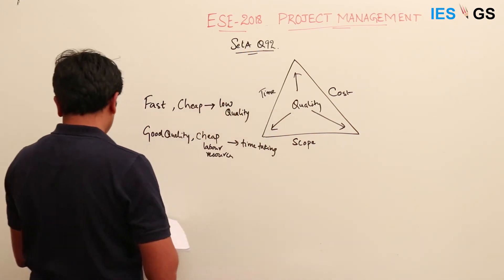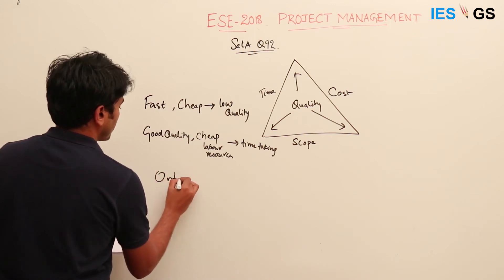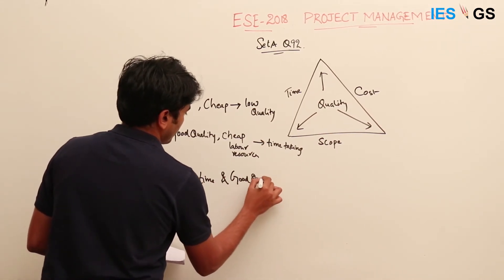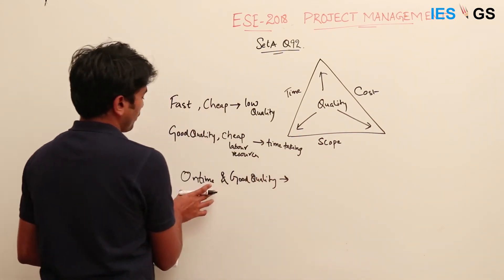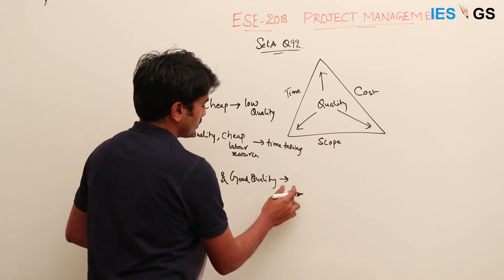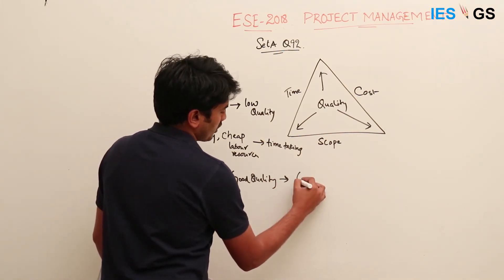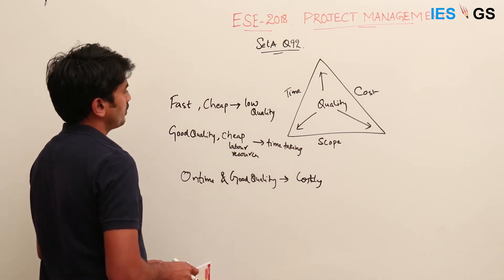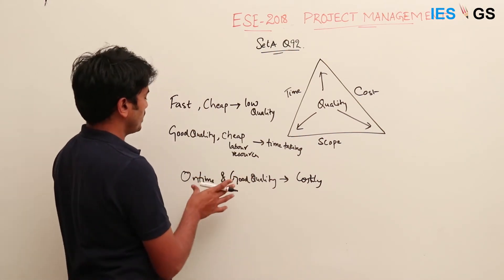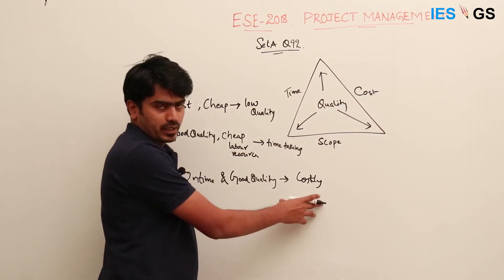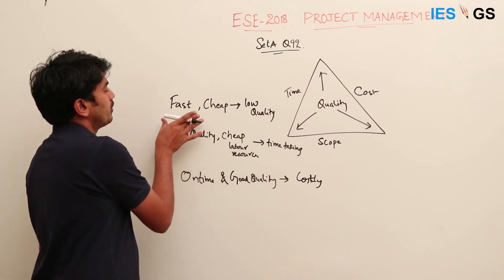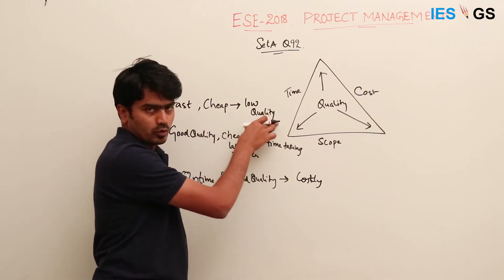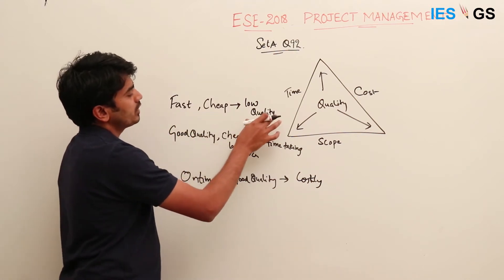A third case: if you are doing a project on time with very good quality, meeting the deadline and delivering a good quality product, it will be costly — it won't be cheap. So every two factors are determining the third parameter; it's not that one factor determines another. Every time, two factors are affecting the third factor, keeping the scope fixed.